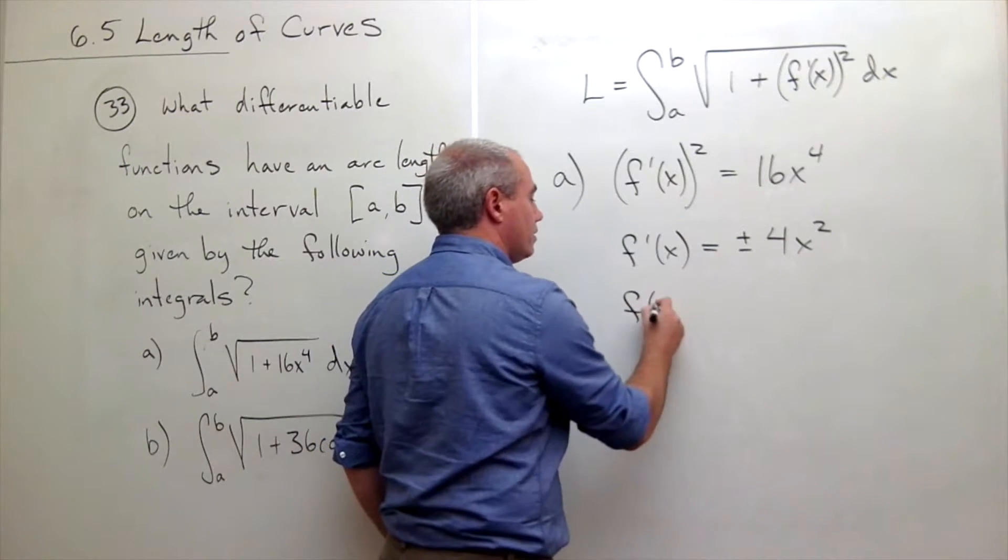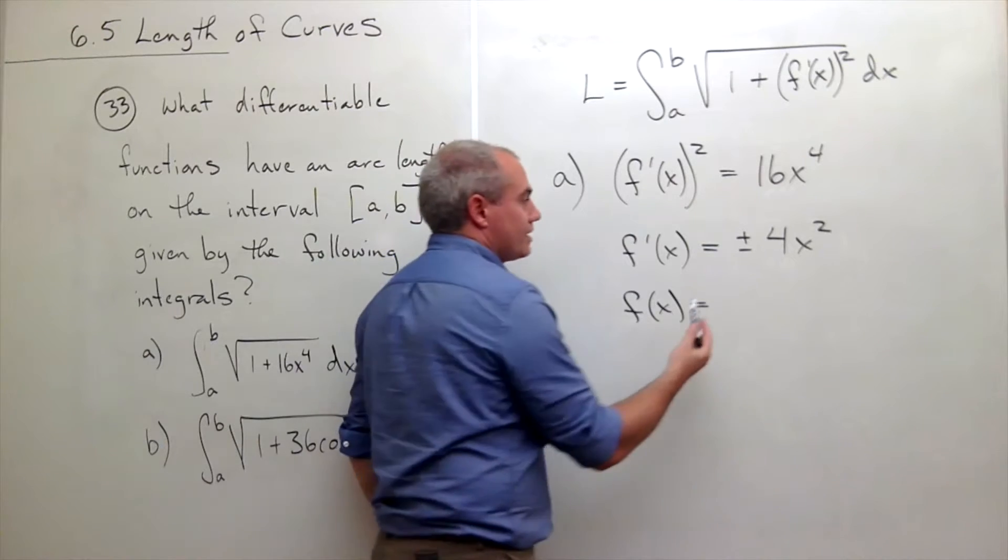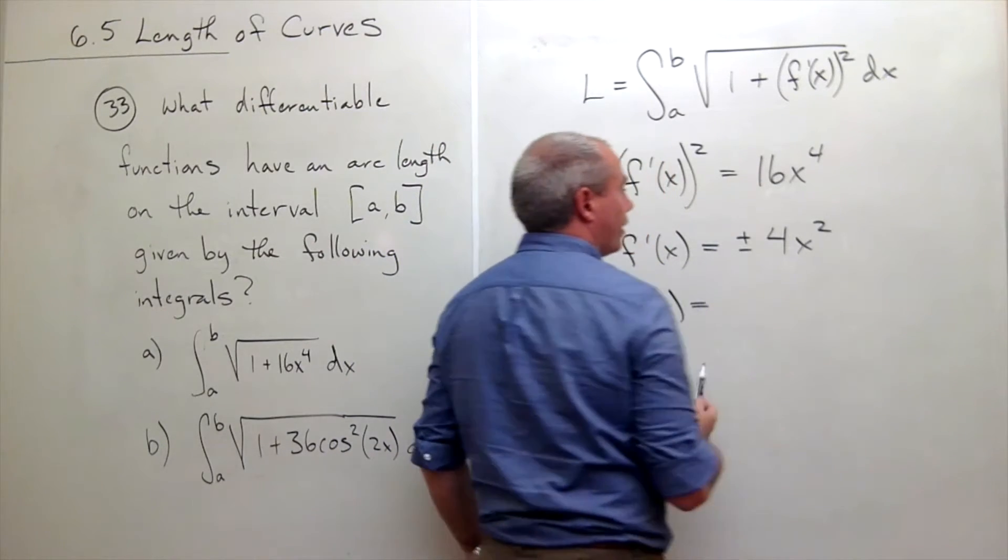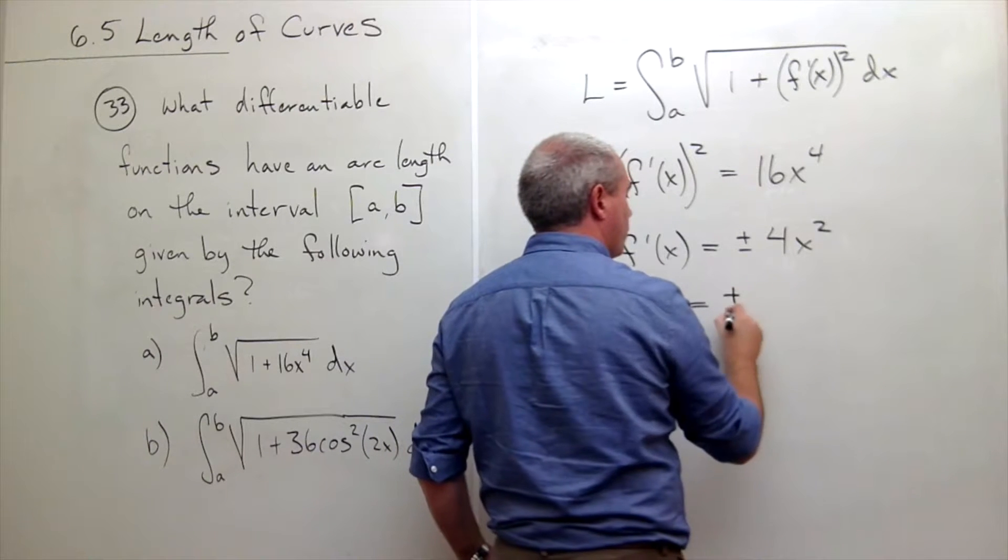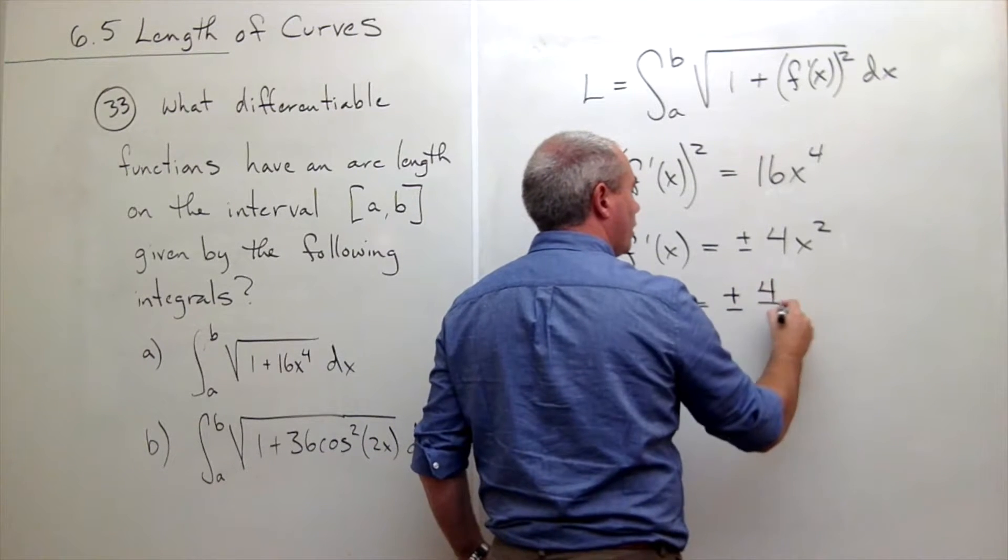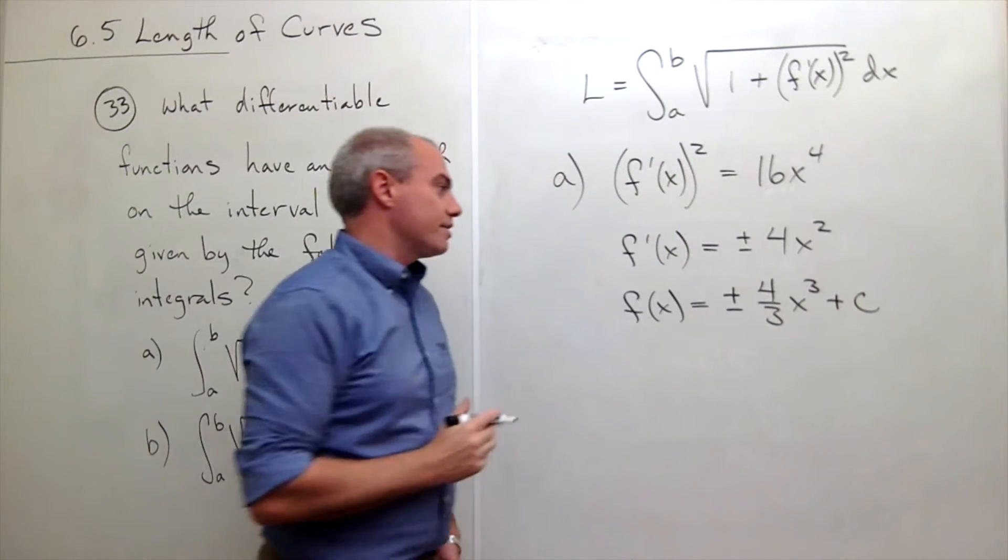So f of x, in this case, would be, what's the anti-derivative of 4x squared? Bump up the power, divide by 3, and I get plus or minus 4 thirds x cubed plus some constant c.